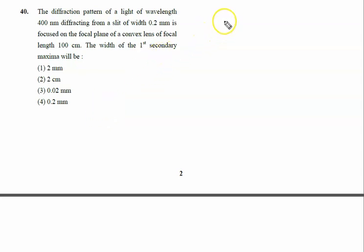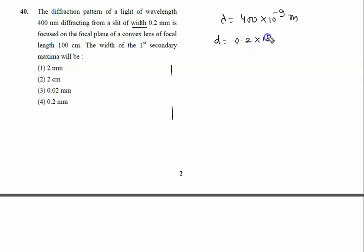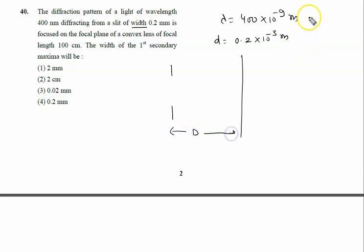The diffraction pattern of light with wavelength 400 nanometers, that is 4×10⁻⁷ meters, diffracting from a slit of width 0.2 millimeter, that is 0.2×10⁻³ meters, is focused on the focal plane of a convex lens of focal length 100 centimeters. The screen distance D is given as 100 centimeters, which equals 1 meter. We need to find the width of the first secondary maximum.